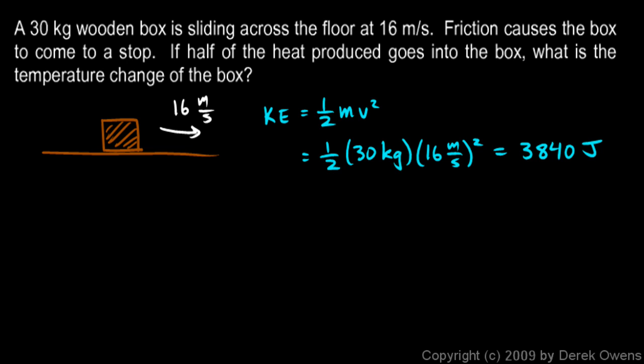So we're going to deal with heat and calories, so let's convert that to calories. 3,840 joules times one calorie per 4.18 joules, and joules cancels, and that gives us 919 calories. That's how much heat is produced because of the kinetic energy getting converted into the heat due to the friction.